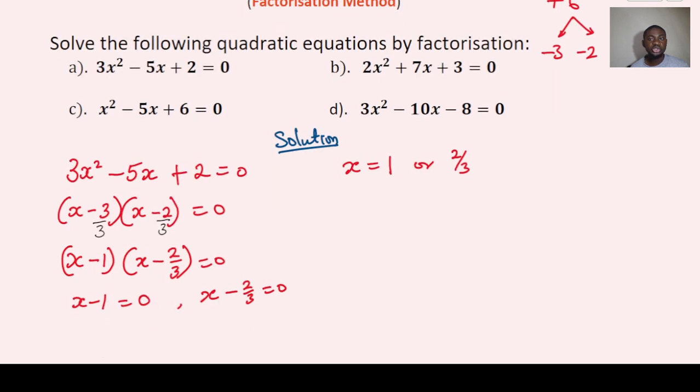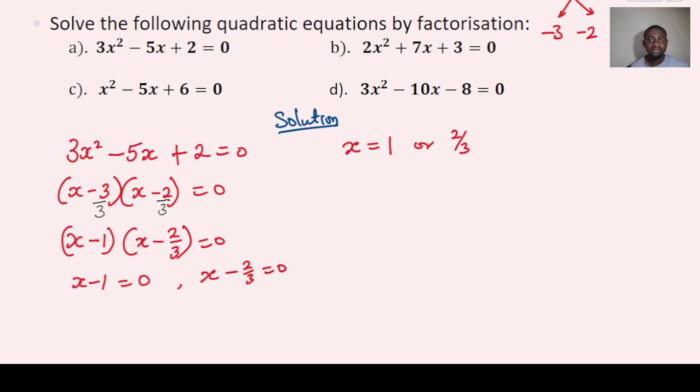I also want to try it on another one. So let's say we have the, let's say we pick D, where we have 3x² - 10x - 8 = 0.